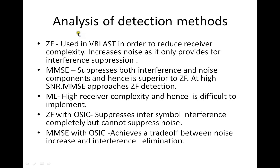Analysis of detection methods: Zero-forcing is used in VBLAST to reduce complexity, but it only suppresses interference and cannot suppress noise — that is its disadvantage. MMSE suppresses both interference and noise and is therefore superior to zero-forcing; at low SNR it becomes a matched filter, and at high SNR it approaches zero-forcing. Maximum likelihood gives the best BER performance but receiver complexity makes it difficult to implement. ZF with OSIC and MMSE with OSIC are enhanced versions of ZF and MMSE respectively, providing efficient interference cancellation.